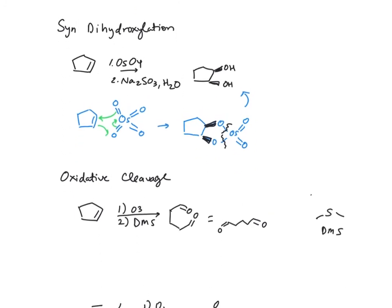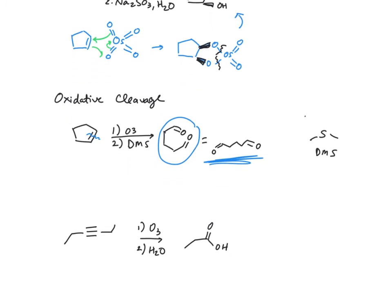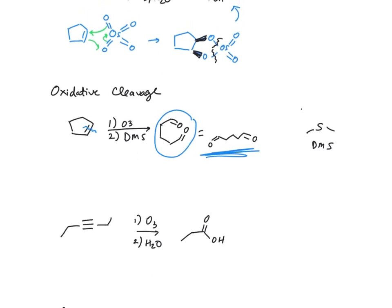Oxidative cleavage is one of those reactions you don't need to know the mechanism for. The easiest thing to do is draw a squiggle through your pi bond and then add oxygens to both sides. When you have an alkyne, the difference is that when you're breaking this pi bond, you get two carboxylic acids.